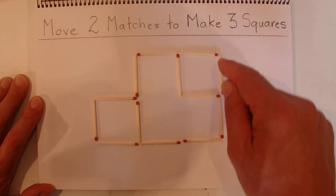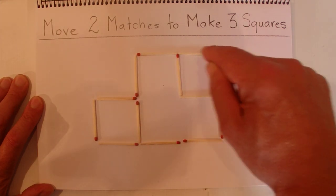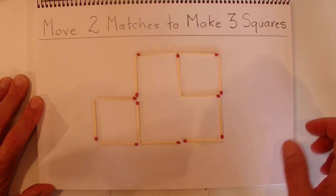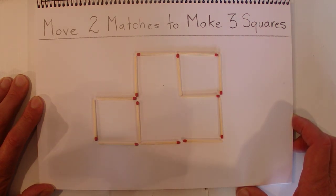You've got one, two small squares, and then you've also got a third larger square which is a double-sized square.